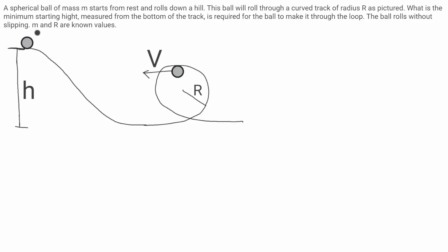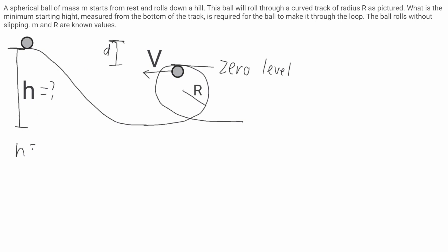A ball sits at the top of a hill of height h — this is ultimately what we're solving for. The ball will roll down this hill and through a loop, then out the other side. I'm going to set my zero level at the top of the loop. So this height d is the distance from the ball down to the top of the loop, and the height we're solving for is h = d + 2R.